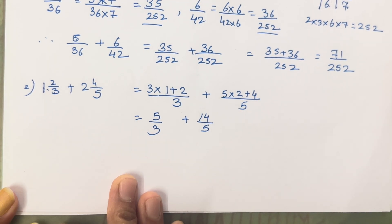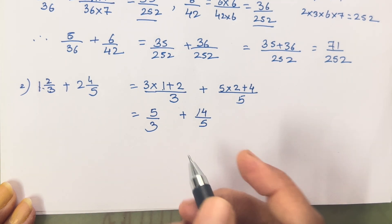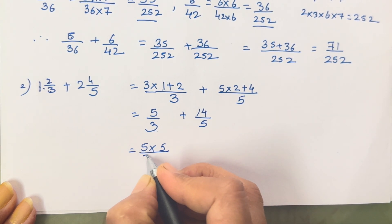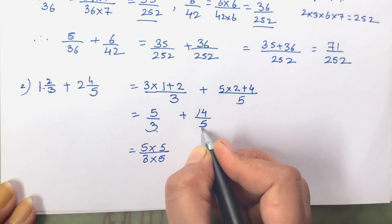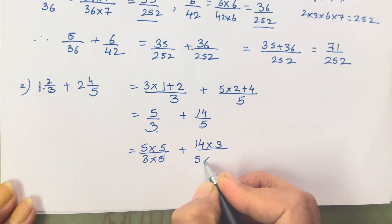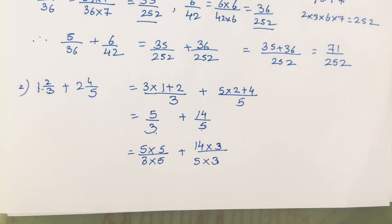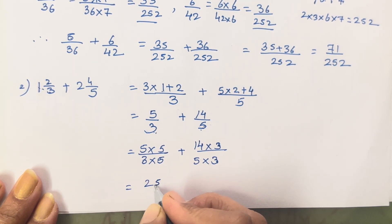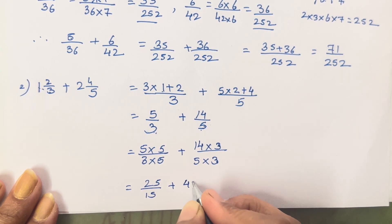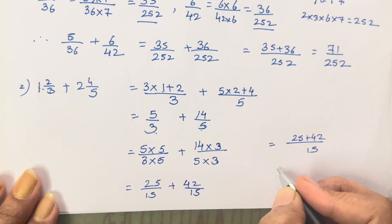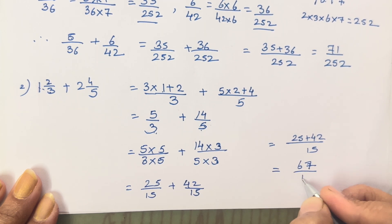Now we will rationalize the denominator — that means making them equal. Multiply 3 by 5 and 5 by 3 so both denominators become 15. So 5 × 5 over 3 × 5 gives 25 upon 15, and 14 × 3 over 5 × 3 gives 42 upon 15. Both numerators and denominators are multiplied by the same value. When you add this, 25 + 42 upon 15 = 67 upon 15.